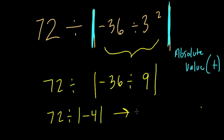So what's going to happen? Well, we get 72 divided by four. Here all I did was take the negative of negative four and make it a positive because all absolute values will be positive.